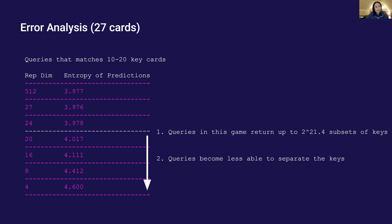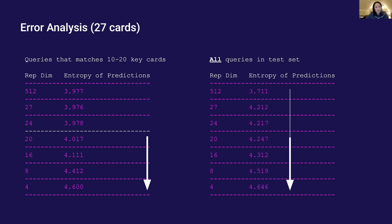Notice that queries in this game can return up to 2 to the power 21 subsets of keys and starting with dimension 20, entropy grows more dramatically.